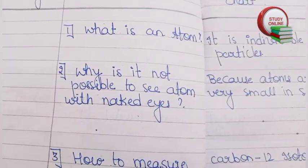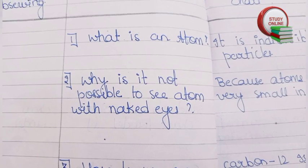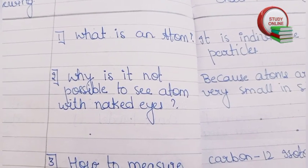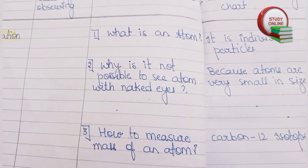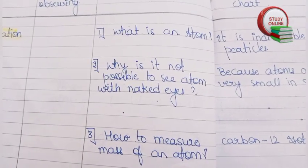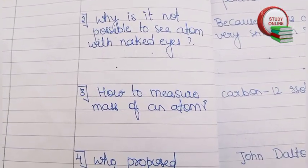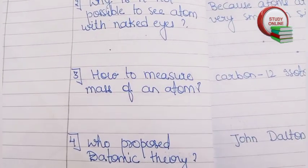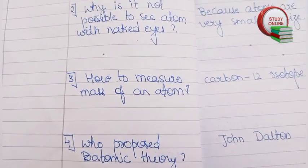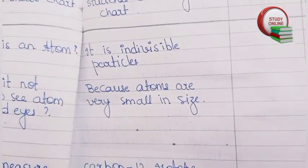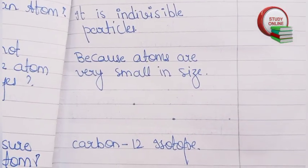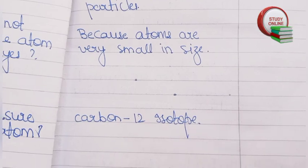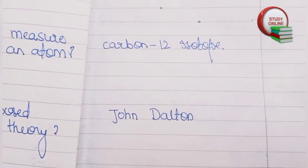Now here is the recapitulation section, where the teacher can ask around five questions. For example: what is an atom, why is it not possible to see an atom with the naked eye, how do you measure the mass of an atom, and who proposed Dalton's atomic theory. Here you can see the expected answers from students.